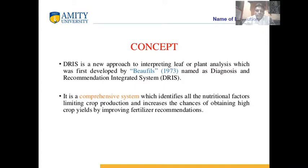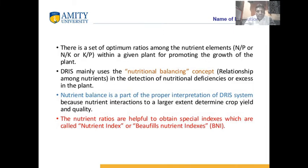The concept of DRIS was first developed by Beaufils in 1973, and the full form is Diagnosis and Recommendation Integrated Systems. This is a comprehensive system where many systems are integrated and nutrients are balanced — a mixture of different nutrients including nitrogen, phosphorus, and potassium in balanced amounts — giving the best maximum yield potential. We have studied the ratios N/P, N/K, and K/P. If these ratios match the established average values and are at the same interaction point, then the yield potential is best.